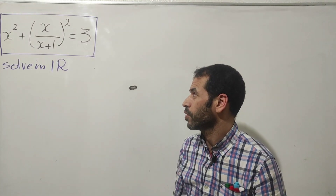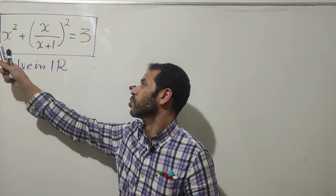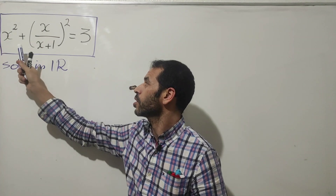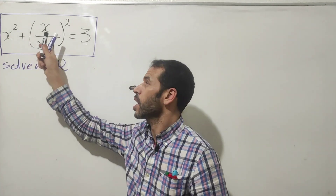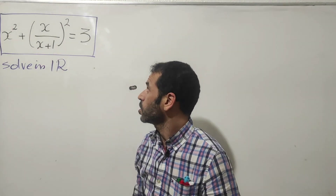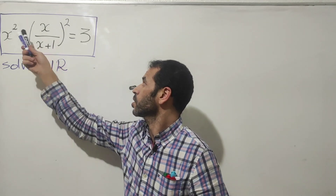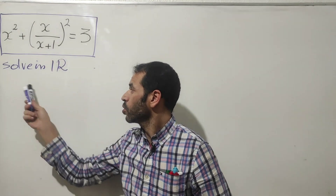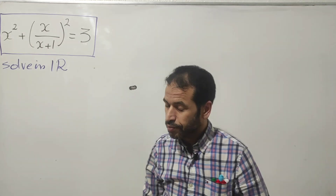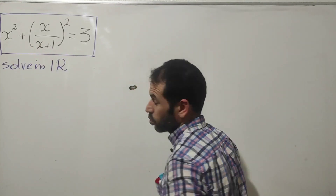In today's video, I have brought a very nice equation. We get two portions: the first is x squared, and the second is the fraction x over x plus one, all raised to the power of two. The entire thing equals three. Our goal is to solve this equation in real numbers.